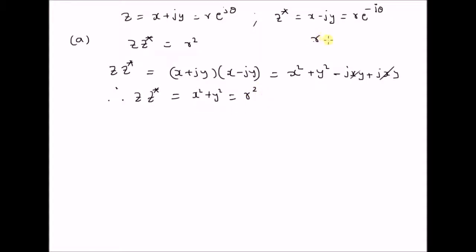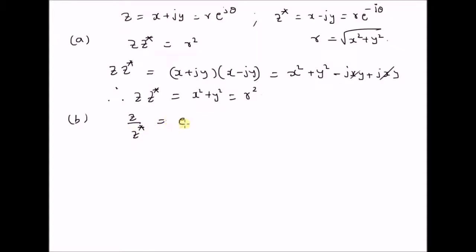That is, r is given by the square root of x squared plus y squared. The next property is that the ratio of a complex number z with its conjugate is given by e power j times 2 theta.